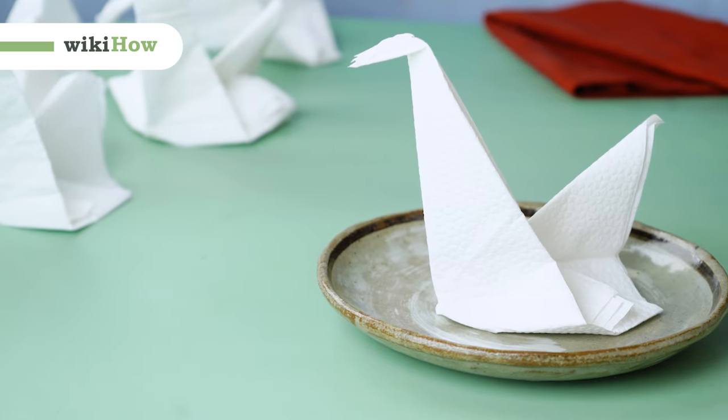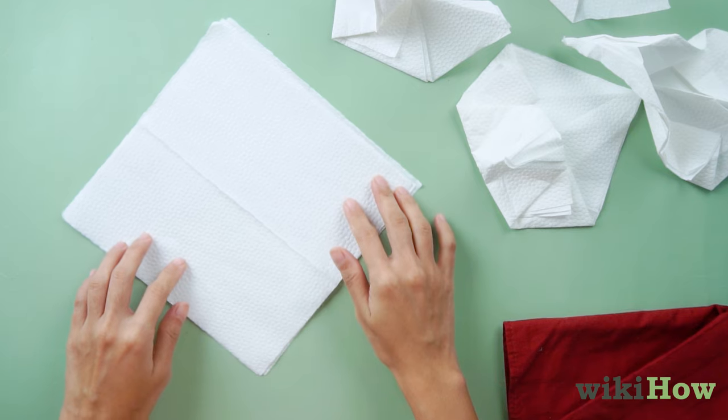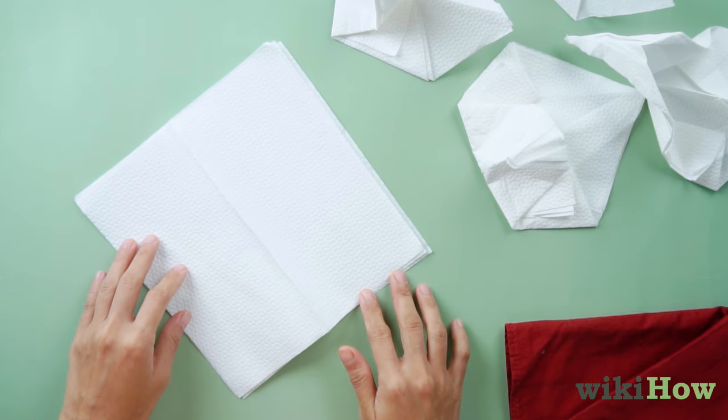To fold a square paper napkin into a swan, lay the napkin flat and turn it so that one of the corners is pointing toward you in a diamond orientation.